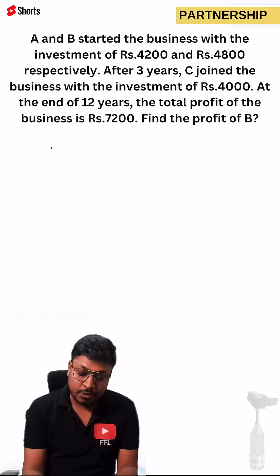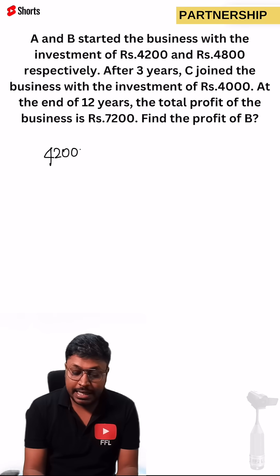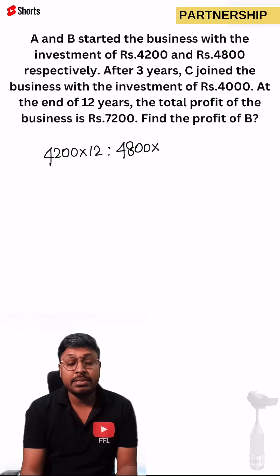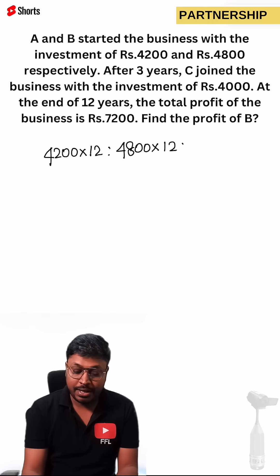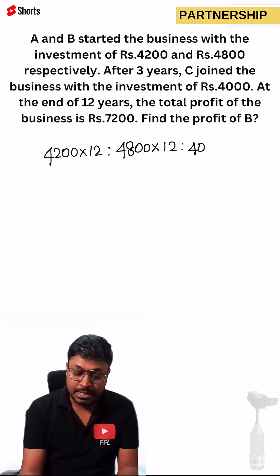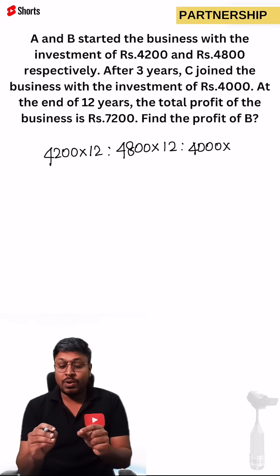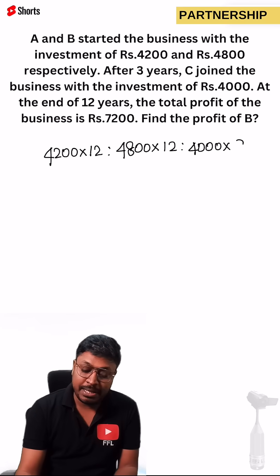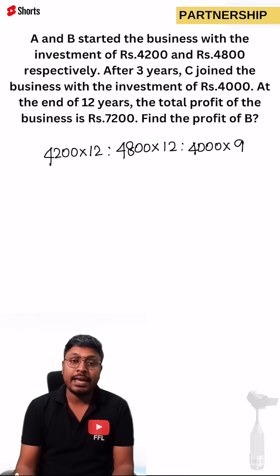A's investment is 4,200 and A will be in the business for 12 years. B's investment is 4,800 and B is also in the business for 12 years. C's investment is 4,000, but person C was not there for the first three years, so C will be in the business for nine years.